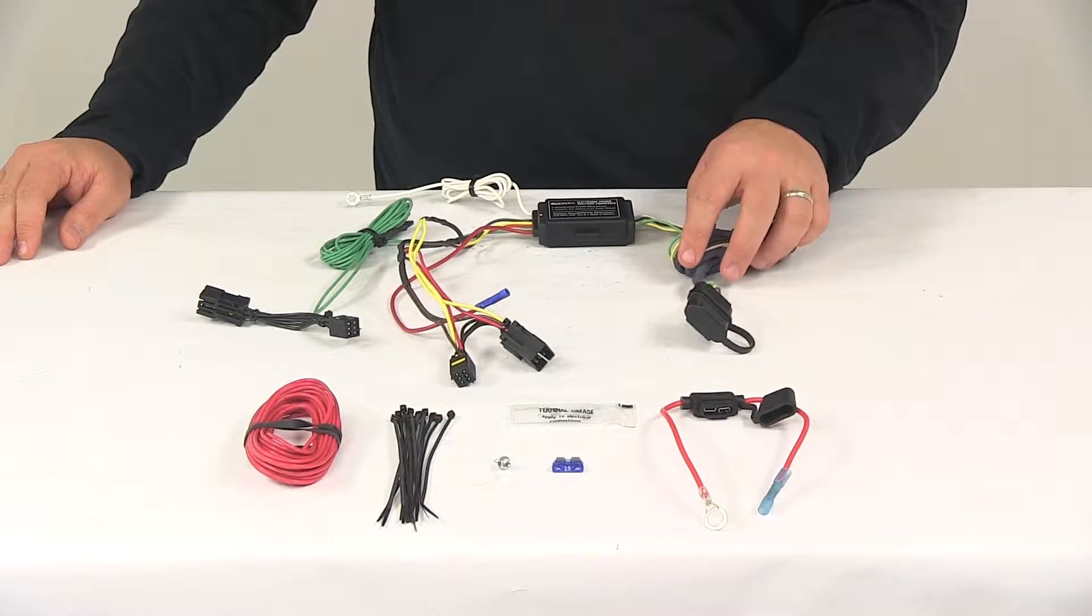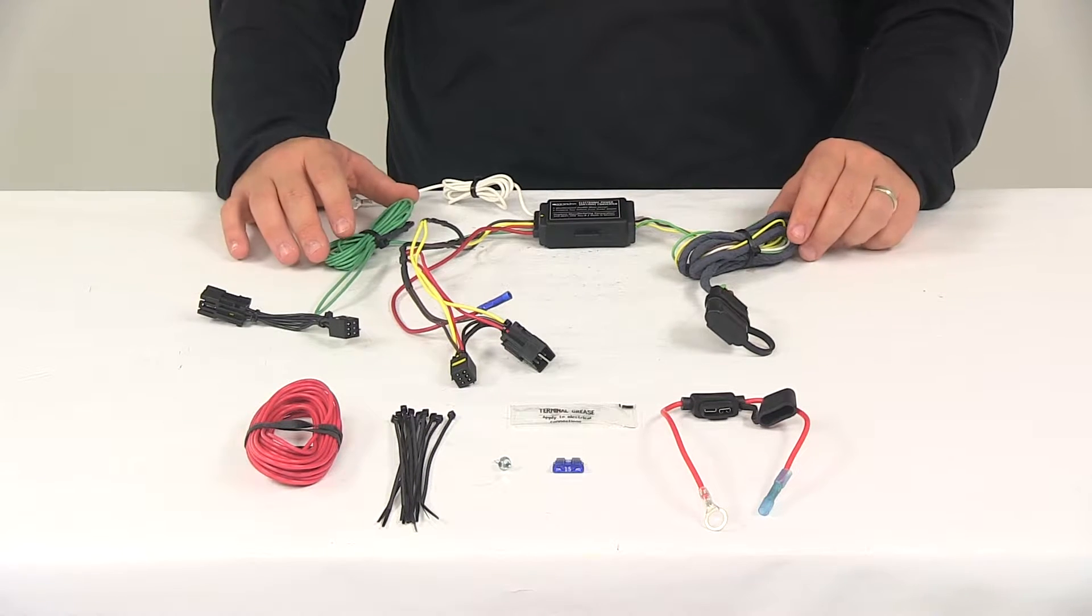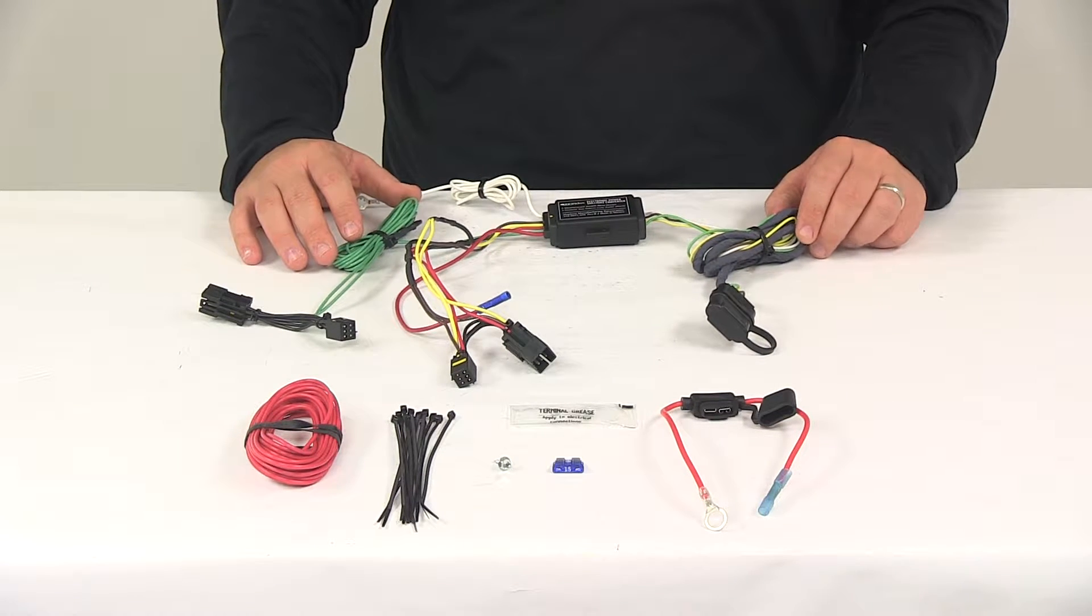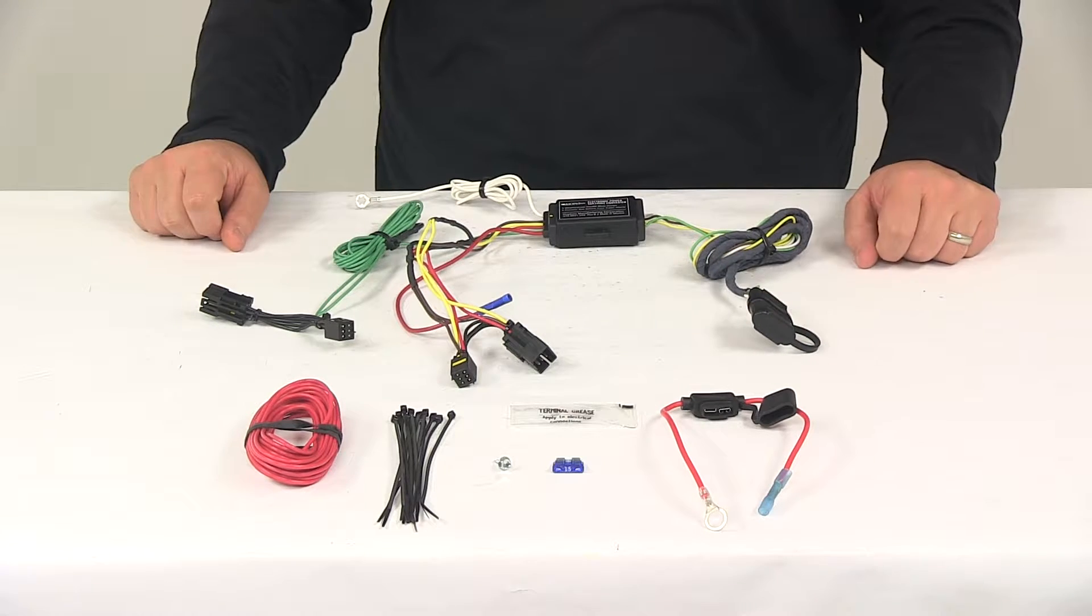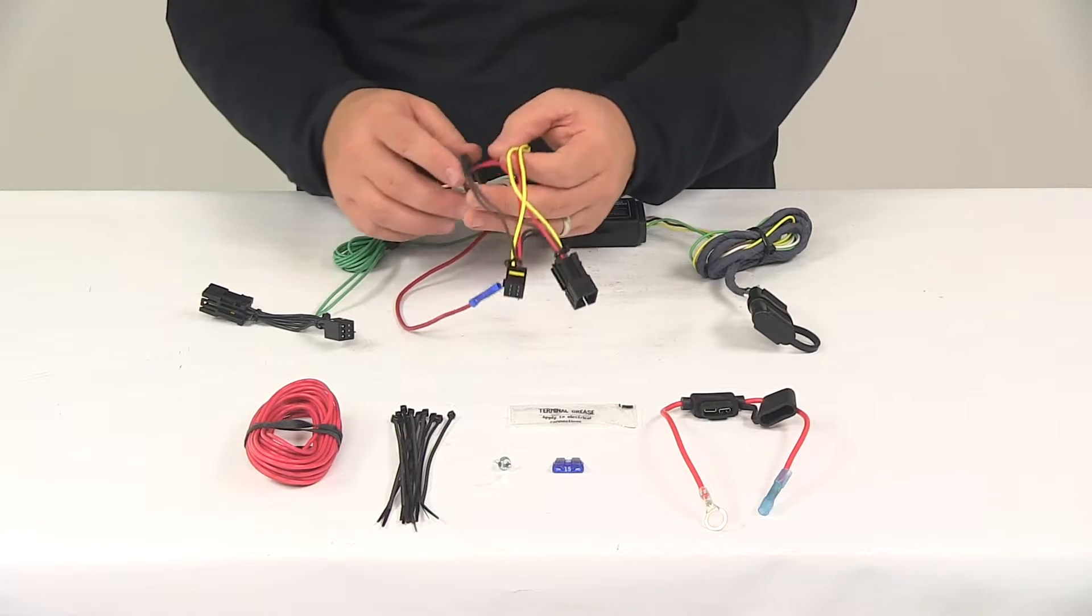Now this unit is designed to connect quickly and easily. It does come with detailed installation instructions that are going to help walk you through that process step by step. But basically what you'll need to do is locate your connection points. Those are going to be in the rear cargo area and plug in your connectors.